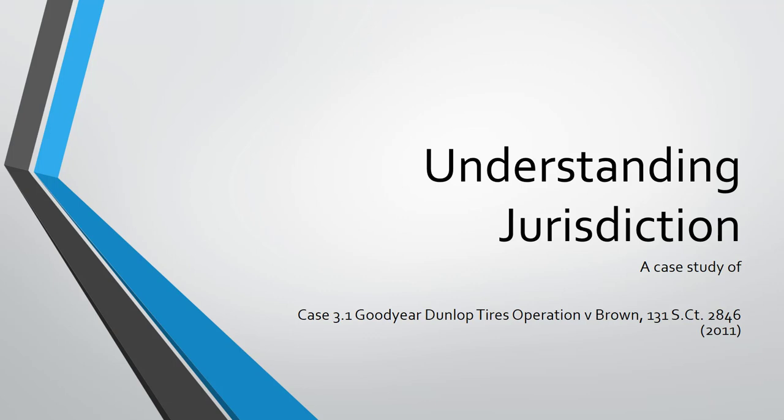This is Professor McLaughlin with a brief lecture on jurisdiction. This will revolve around a case from Chapter 3 in the Melvin book, so I'm calling it a case study. This is the Goodyear Tyre versus Brown case, a 2011 US Supreme Court decision. This will go into a lot more detail than the book and the purpose is to help you understand jurisdiction as applied, bringing more clarity to the concepts that surround jurisdiction.